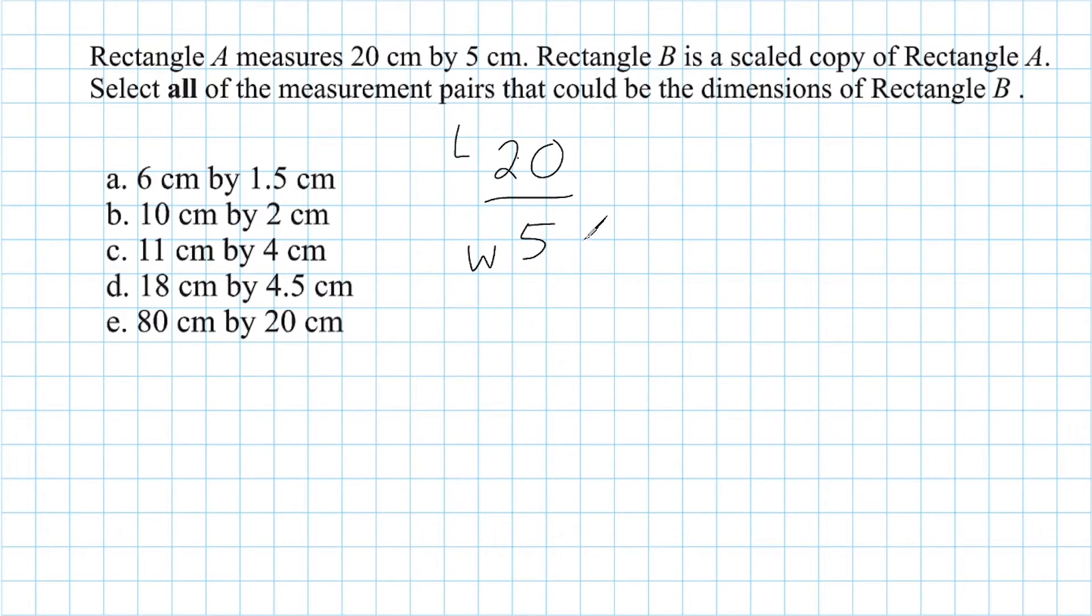Now, what we can say about rectangle A is that this rectangle's length is 4 times greater than its width, and that would be true for any object that is similar to rectangle A.